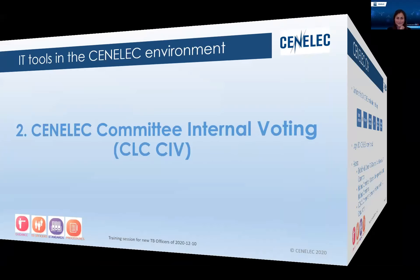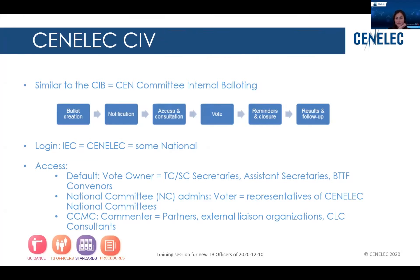The CIV — committee internal voting — is something similar to the CIV in CEN if you know it. It's a platform where technical committees can create questionnaires, surveys and those kinds of things whenever they need them. It has a small flow of ballot creation, a notification system, people can access and do consultations, they can vote, and then there are reminders and a closure of the vote with the automatic compilation of the results available for the TC secretary.